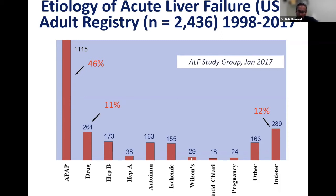When we went back and looked at the indeterminate cases, many were actually acetaminophen. So the true number is closer to 50 to 55% acetaminophen cases. When we see a patient in the U.S. without a clear etiology, we consider acetaminophen as the most likely cause of acute liver failure.